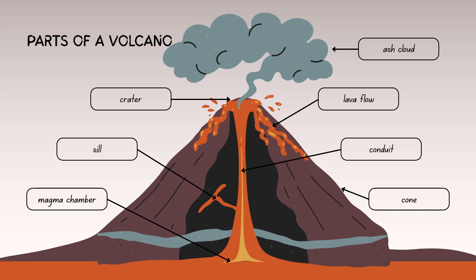Vents can occur on the sides or even at the base of a volcano. A lava flow is molten rock that reaches the earth's surface — it can flow downhill, covering the surrounding terrain and solidifying as it cools.